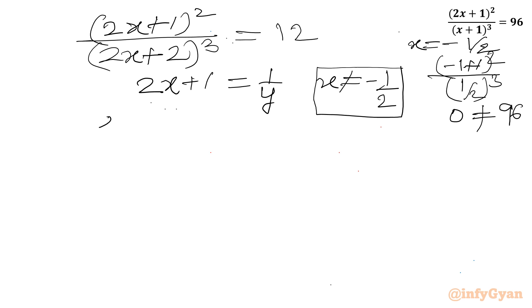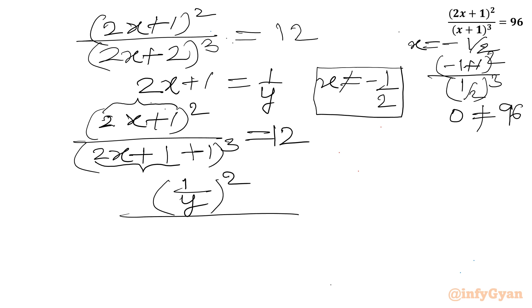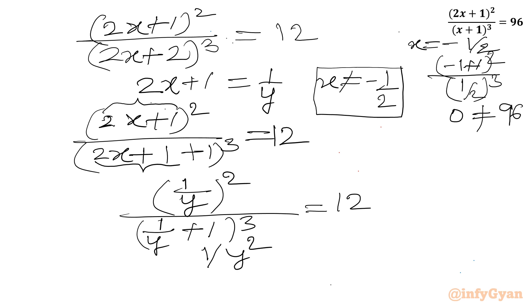So I can write (2x + 1)² in the numerator, and the denominator as (2x + 1 + 1)³. Substituting 1/y for 2x + 1, this becomes (1/y)² over (1/y + 1)³ equal to 12. Or equivalently, (1/y²) over ((y + 1)³ / y³) equal to 12.